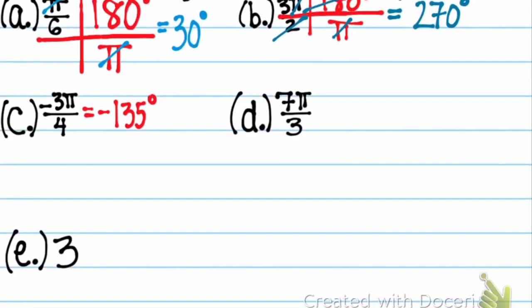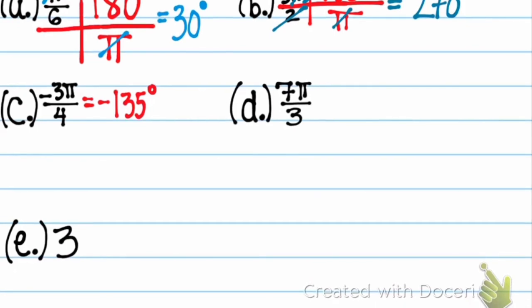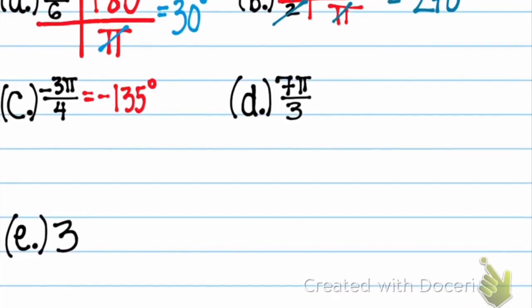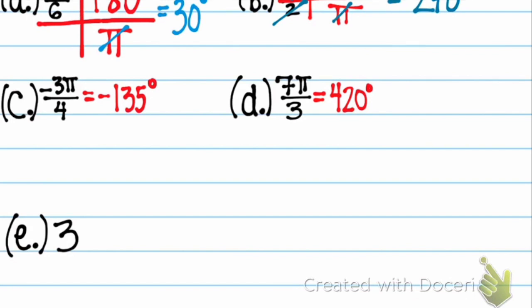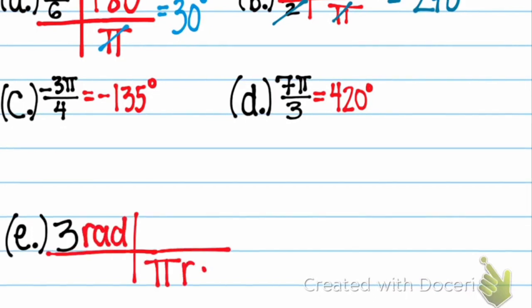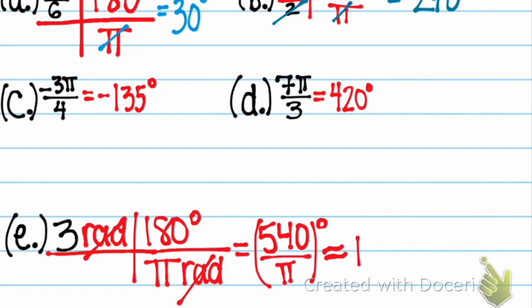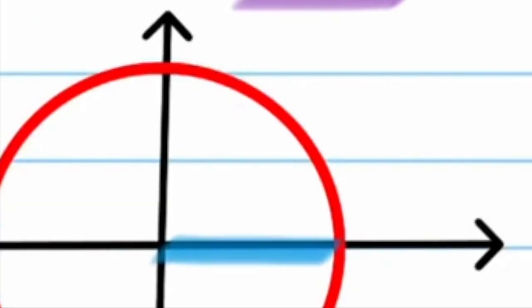That's the end of today's lesson. I hope you're able to describe what a radian is, and convert to and from radians and degrees. And I also hope you still remember how to convert to and from decimal degrees to degrees, minutes, seconds.